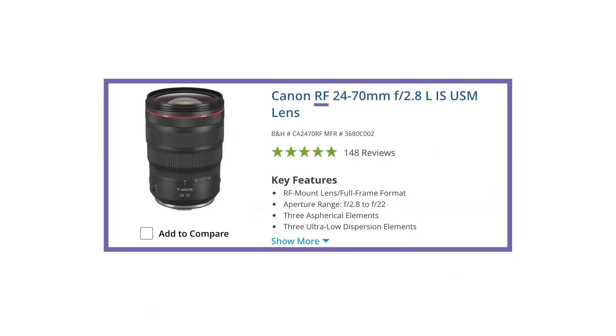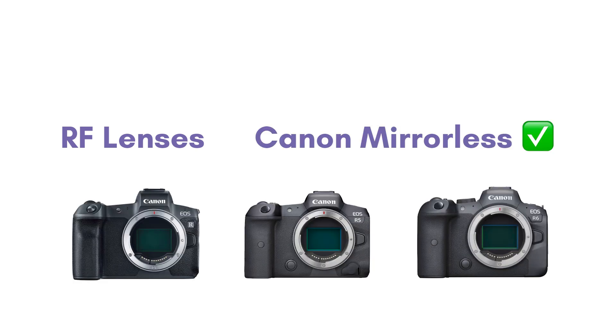RF is the new lens mount for the Canon mirrorless cameras, which is a different mount than the DSLRs' EF. That means RF lenses are not compatible with any DSLR camera, only the mirrorless series. As far as I know, there are no adapters to make that work, but it is important to say that there is an adapter available that allows you to use EF lenses on mirrorless cameras.